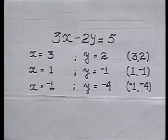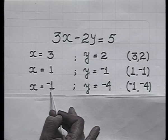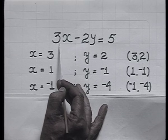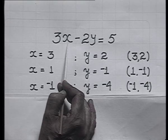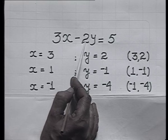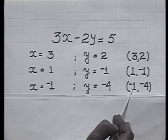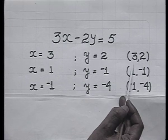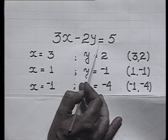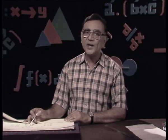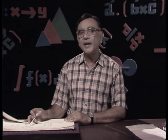When x is minus 1 and y is minus 4: 3 times minus 1 minus 2 times minus 4 gives minus 3 minus negative 8, which becomes minus 3 plus 8 equals 5. So this ordered pair (minus 1, minus 4) also satisfies this equation. All these ordered pairs convert the linear equation into a true statement, so we call them solutions of the given linear equation in two variables.